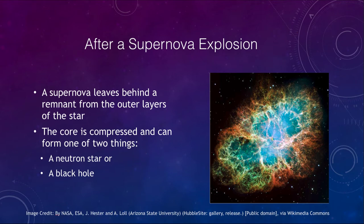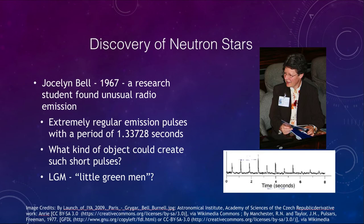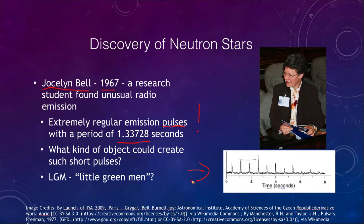Let's look at how neutron stars were first discovered. This discovery was made by Jocelyn Bell in 1967. She was a research student, and she found unusual radio emissions. What she found was that it was an extremely regular emission — pulses of radio emission coming every 1.33728 seconds, very consistent and regular from one pulse to the next. There was something very organized going on.